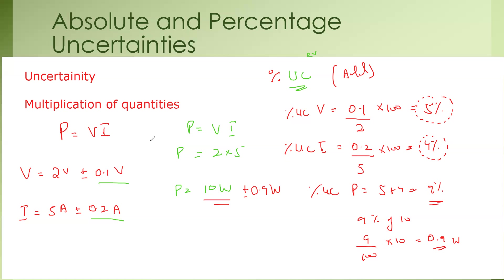Rounding off is another important part. How many significant figures should you use for the uncertainty? You always use the minimum number of significant figures in the quantity. Here we have only one significant figure in the uncertainty, so we use one significant figure. If one quantity had two significant figures and another had one, we use the minimum number.